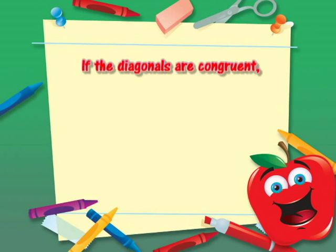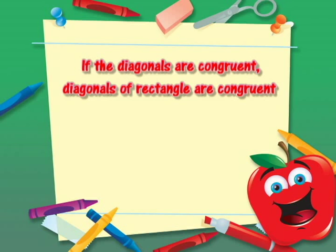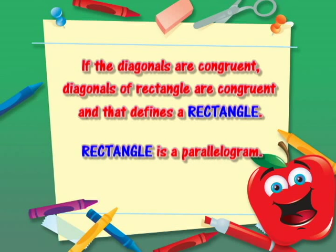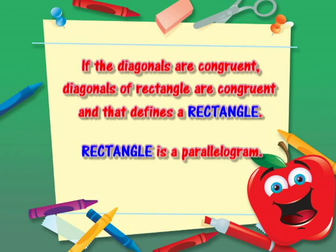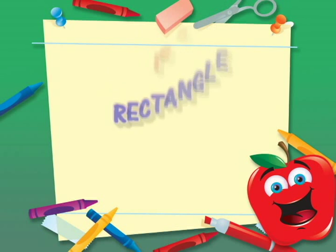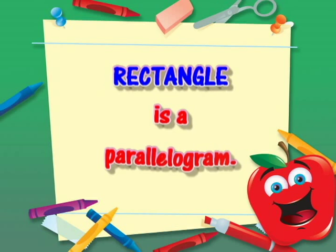Let's have another one. If the Diagonals are congruent, Diagonals of a Rectangle are congruent. A Rectangle is a Parallelogram.